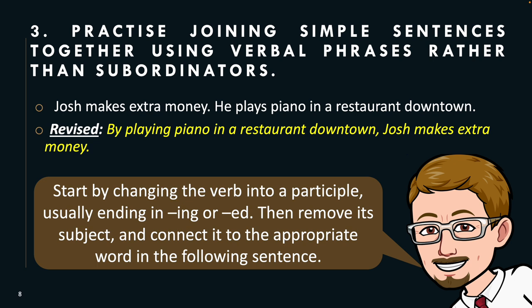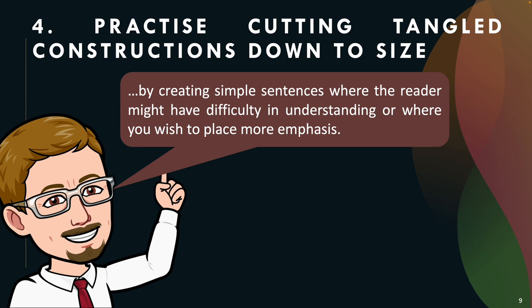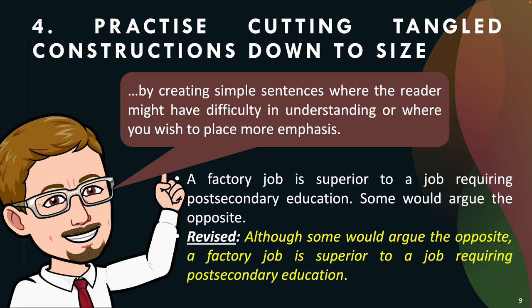Let's take a look at the fourth suggestion: practice cutting tangled constructions down to size by creating simple sentences where the reader might have difficulty understanding, or where you wish to place more emphasis. For example: 'A factory job is superior to a job requiring post-secondary education. Some would argue the opposite.' Revised using the subordinating conjunction 'although': 'Although some would argue the opposite, a factory job is superior to a job requiring post-secondary education.'